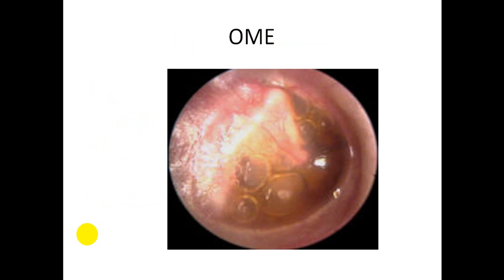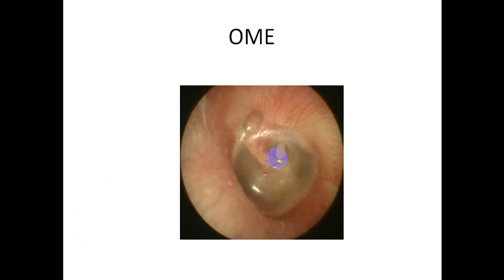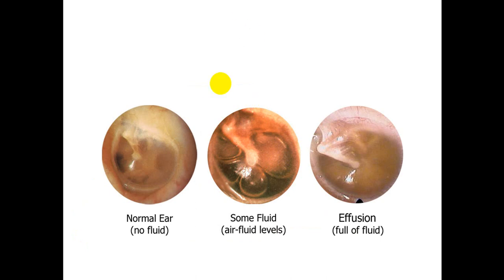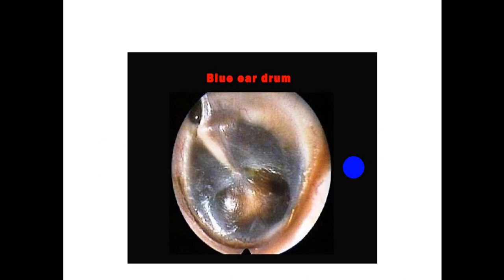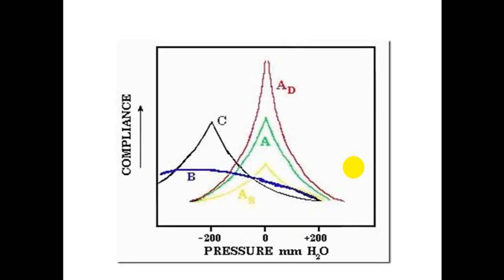The appearance of otitis media with effusion shows a yellowish retracted membrane with the presence of air bubbles. A dull gray retracted tympanic membrane may also be seen, as well as air-fluid levels and a yellow retracted tympanic membrane, or a blue drum. On tympanometry, patients with otitis media with effusion show a type B flat tympanogram.